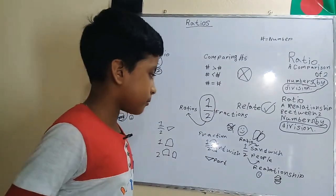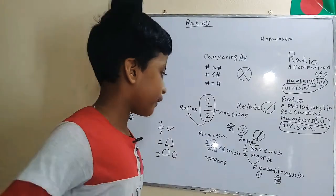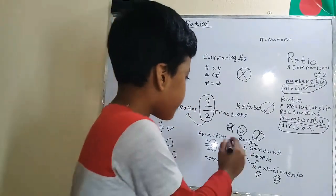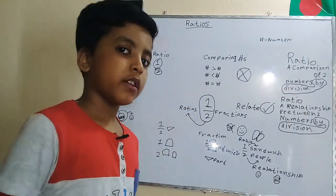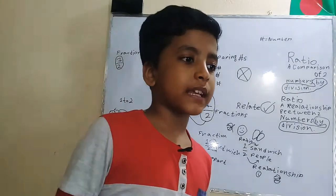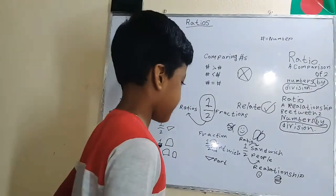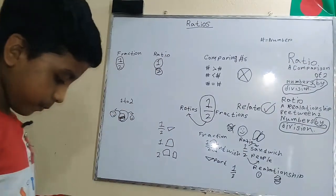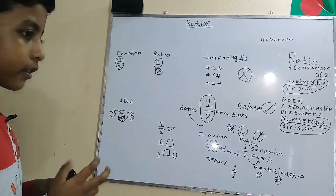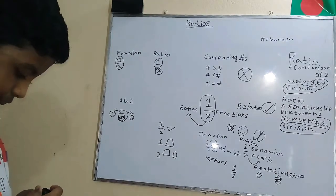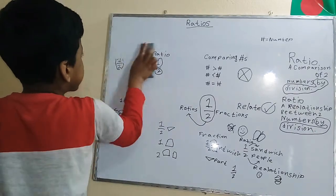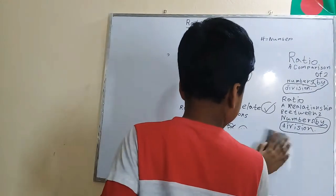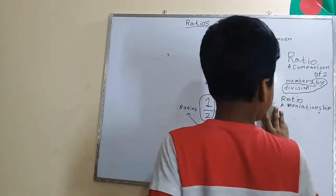You can also see that they're related. If there is just one sandwich for every two people, guess how many sandwiches each person will get? Half a sandwich. So you learn that fractions and ratios are basically the same thing — the difference is how we use them in real life.